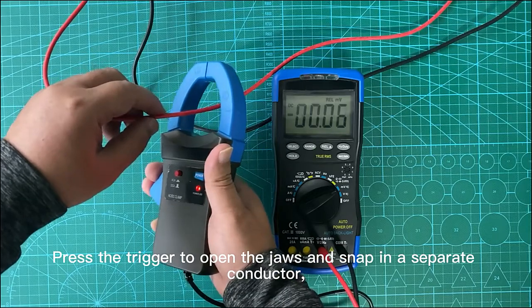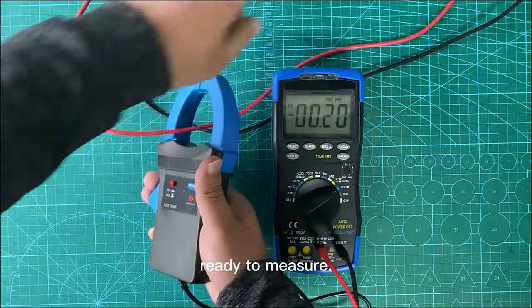Press the trigger to open the jaws and snap in a separate conductor ready to measure.